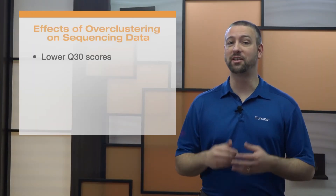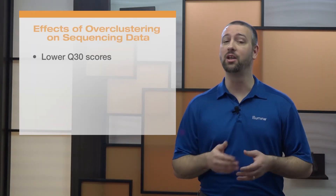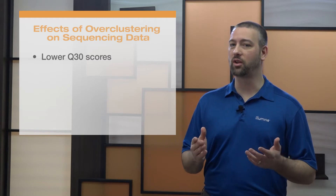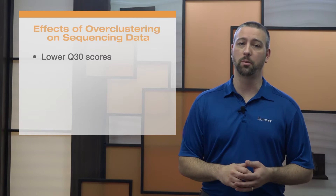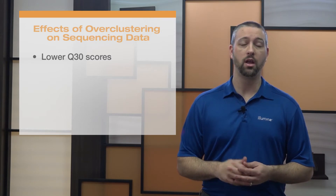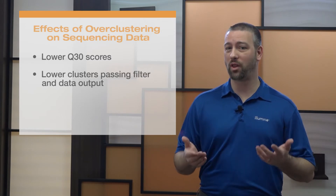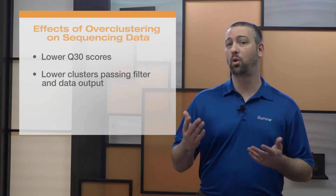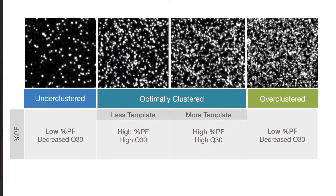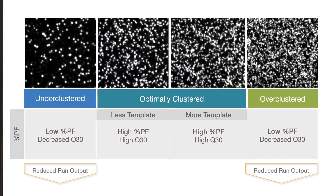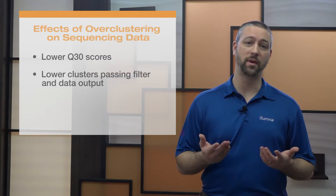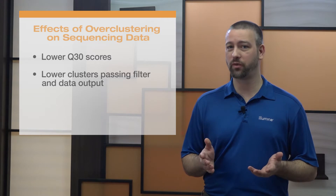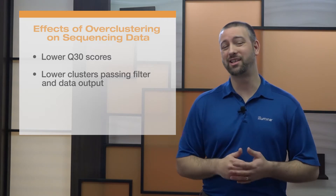First, overloaded signal intensities decrease the ratio of base intensity to background. This creates ambiguity during base calling and decreases data quality, leading to lower percent greater than Q30. Next, over clustered flow cells typically have more overlapping clusters, which leads to poor signal purity from each cluster and thus poor template generation. This decreases the percent of clusters passing filter, or percent PF, ultimately reducing run output. Also, index reads typically have lower diversity, which can cause poor base calling. Since over clustering worsens the potential for poor base calling, this can lead to demultiplexing failure.